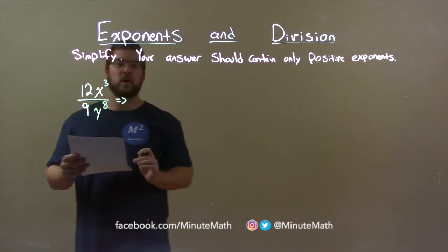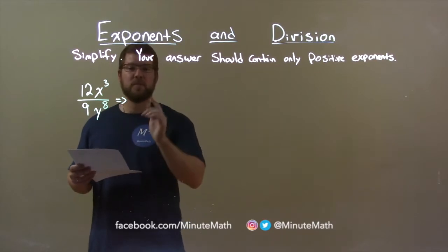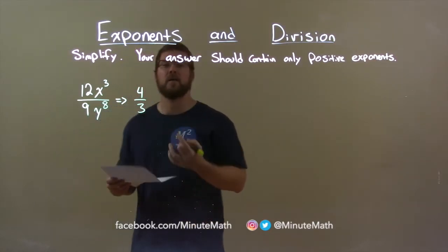Let's first look at the coefficients. 12 divided by 9 can be simplified to be 4 over 3. We can divide both numbers by 3 to get that.